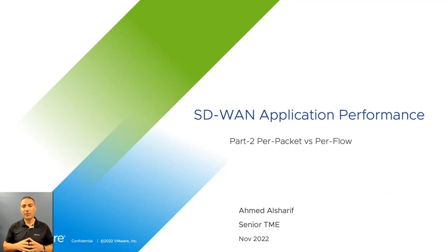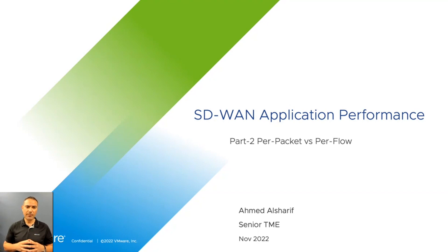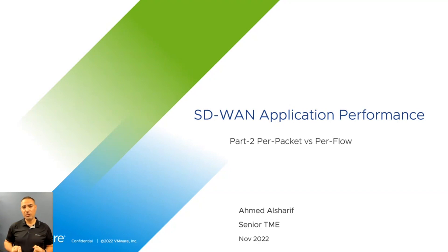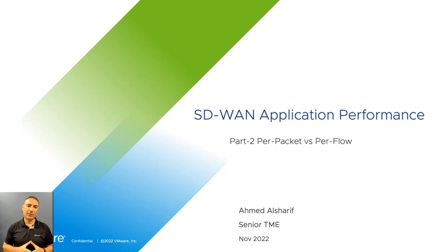Before I start with this video, I would like to remind you of what we learned in the previous video. We know that there are two technologies that SD-WAN devices can use to utilize all of the transport circuits between the source and the destination to optimize application performance, and those are pair flow and pair packet technology.